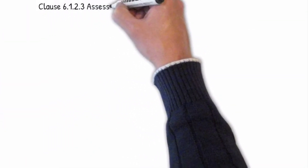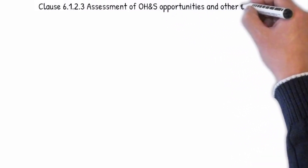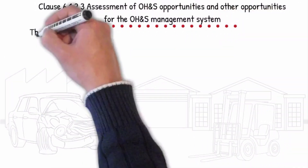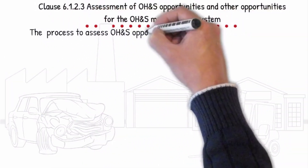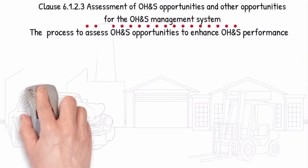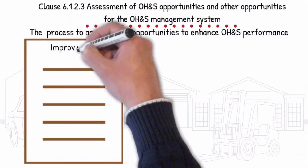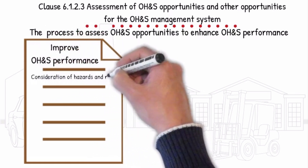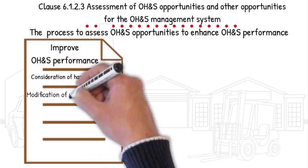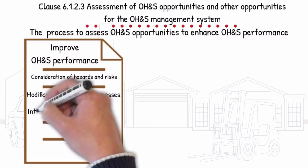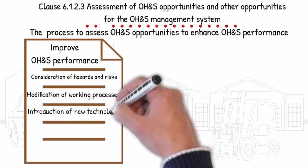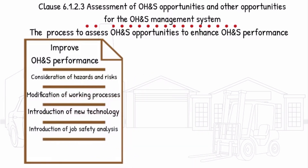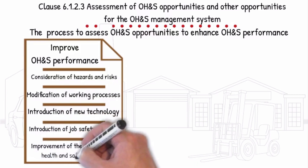Clause 6.1.2.3 — Assessment of OH&S opportunities and other opportunities for the OH&S management system. The process to assess OH&S opportunities to enhance OH&S performance shall include consideration of hazards and risks, modification of working processes, introduction of new technology, introduction of job safety analysis, and improvement of the occupational health and safety culture.